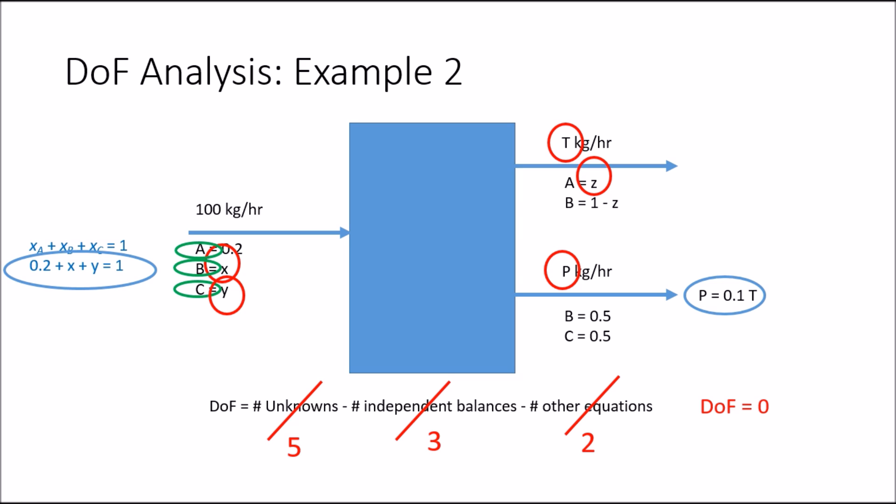So we can solve for all five variables in this example as well. Hopefully these two examples show that degree of freedom analysis is a really powerful tool to quickly help us determine whether we have enough information to solve a problem. It is straightforward on a simple unit, but becomes even more important as we look at more complex processes with multiple units. It is often a good place to start with degree of freedom analysis for the different systems in a particular problem. Thank you for watching.